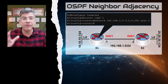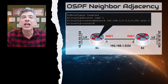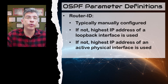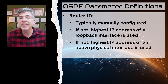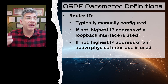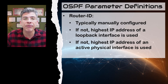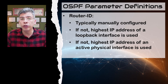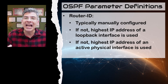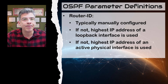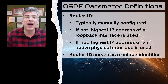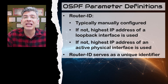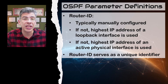Before we talk about the discovery process itself, we need to first define certain parameters. An important part of the operation of OSPF is the router ID. It is typically manually configured in the OSPF routing configuration. If it's not explicitly configured, an OSPF router will choose the highest IP address on a loopback interface. If there is no configured loopback interface on the device, it will use the highest IP address on an active interface. The router ID serves only as an identifier for the router within the OSPF domain, and this identifier must be unique, otherwise there will be an error in the neighbor adjacency process.